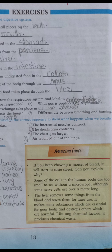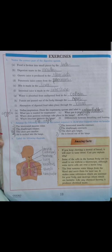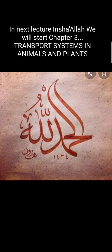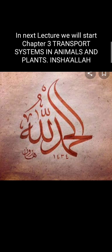Some of the cells in the human body are too small to see without a microscope, although some nerve cells are over a meter long. The liver removes some things from the blood and saves them for later use. It makes some substances which are essential for your body and destroys others which are harmful. Like any chemical factory, it produces chemical waste. Alhamdulillah, I have tried to clear all the topics. If not, then you can ask me in comments. We will meet in our next video. Till then, stay home, stay safe, and Allah Hafiz.